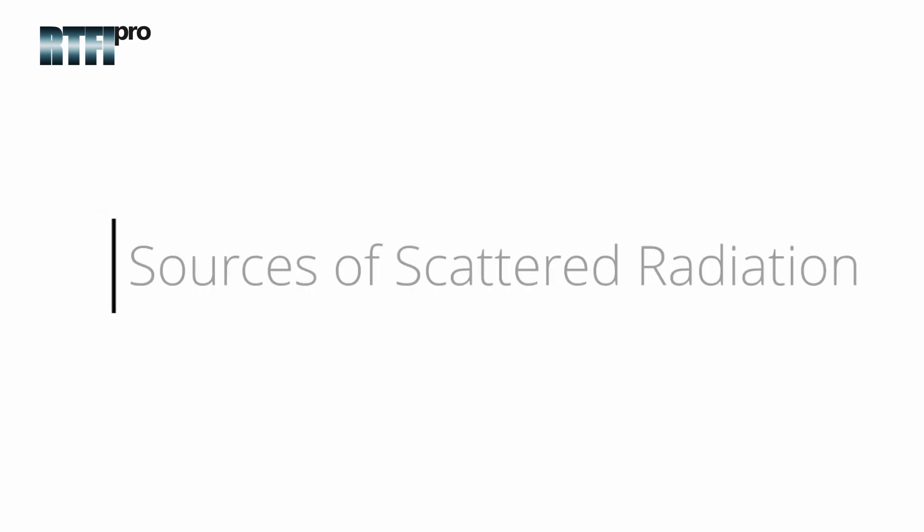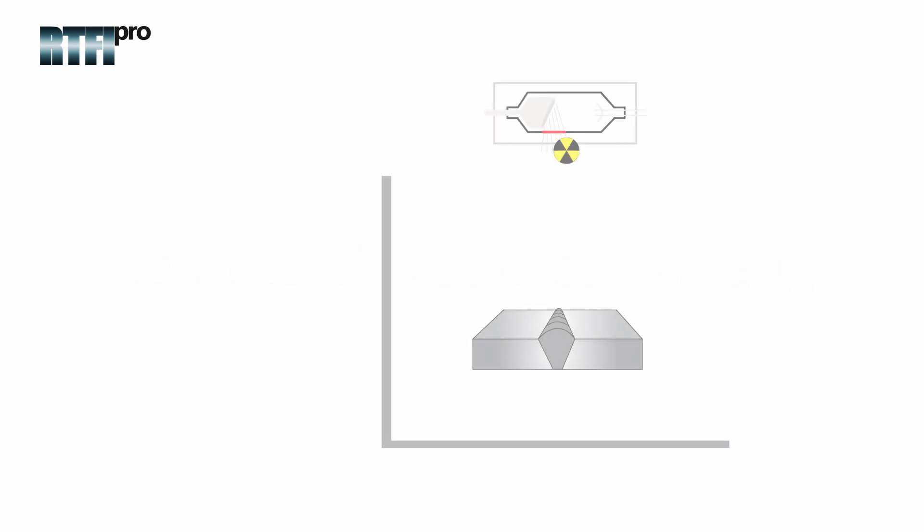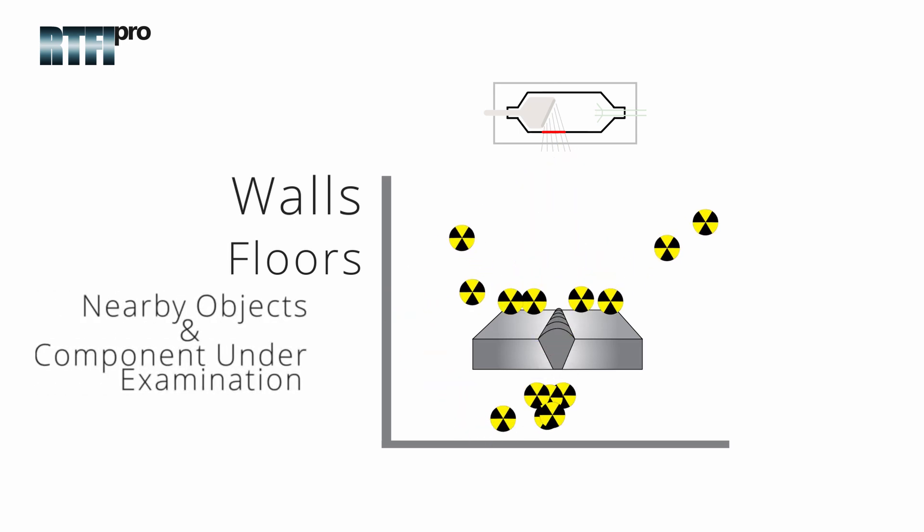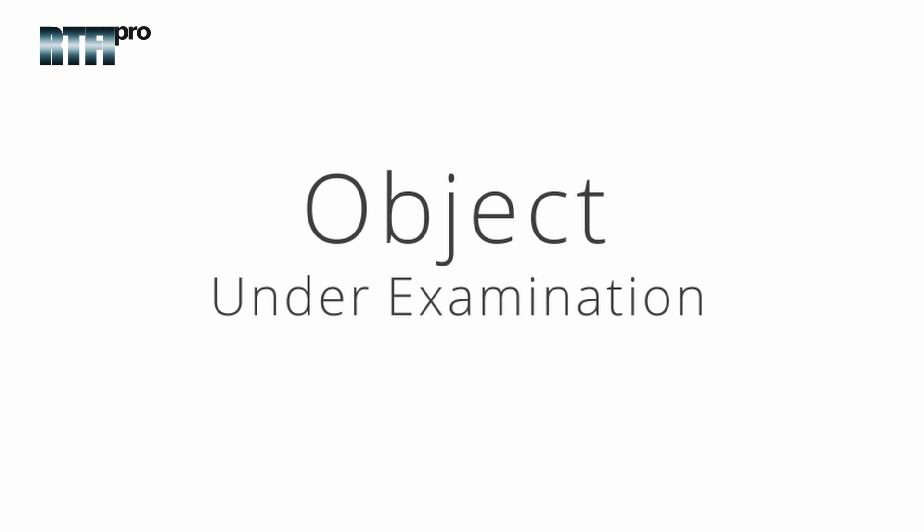Sources of scattered radiation. Scattered radiation can occur from walls, floors, nearby objects, or even the component under examination. The most difficult form to control is the object under examination.